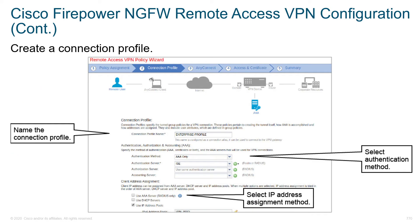Here's our connection profile being created on Firepower. It looks very similar in terms of the things we have to define: a connection profile, an authentication method, an authentication server — here just pointing to ISE — and where our IP address is going to come from. These are the same things we had to define on the ASA, and we have them all within a GUI, so it should feel very familiar.